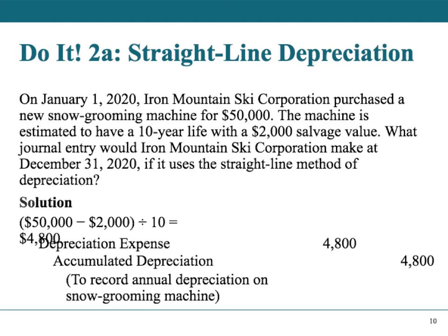Here's another exercise. We purchased a machine on January 1st — remember to check the date. The machine costs $50,000, estimated useful life of 10 years, salvage value of $2,000. Using the straight-line method: cost minus salvage value, divided by useful life: ($50,000 − $2,000) ÷ 10 = $4,800 annual depreciation. That will be the journal entry.